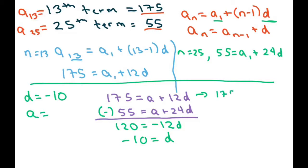You get 175 equals a minus 120, because negative 10 times 12 is 120. Add 120 and you get 395 equals a. So 395 equals a.